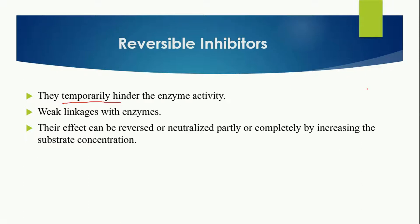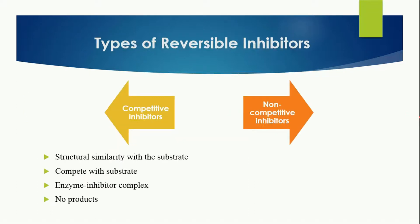Reversible inhibitors temporarily hinder the activity of an enzyme by making weak linkages with it. For some time they attach themselves to the enzyme at the active site by forming weak linkages, and after some time they detach themselves from the active site, allowing the enzyme to perform its activity normally. As the name indicates, their effect can be reversed or neutralized partly or completely by increasing the substrate concentration — the enzyme will then attach to the substrate and release the reversible inhibitor.